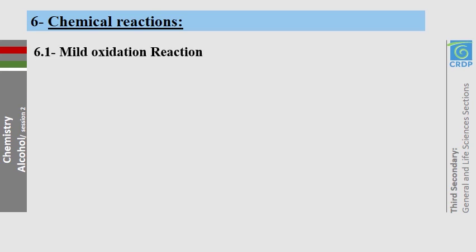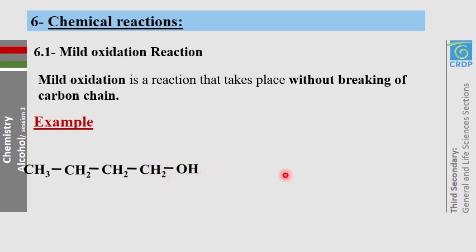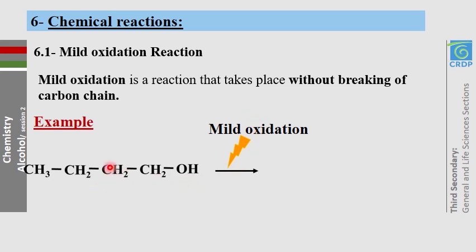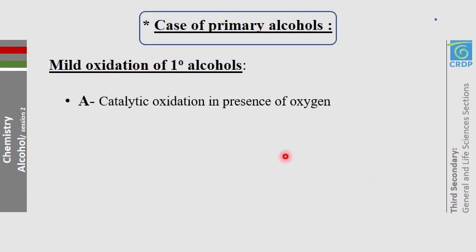First of all, what is meant by mild oxidation? Mild oxidation is a reaction that takes place without breaking of the carbon chain. So by mild oxidation, this carbon chain will remain as it is — changes will only occur on the functional group.